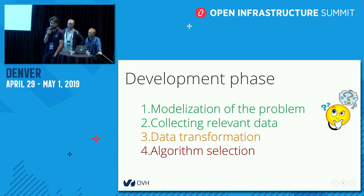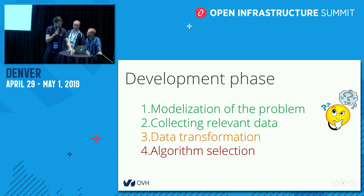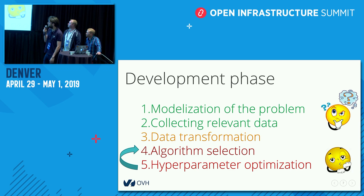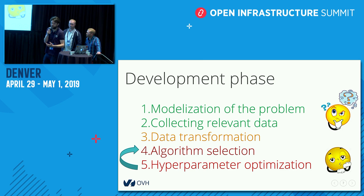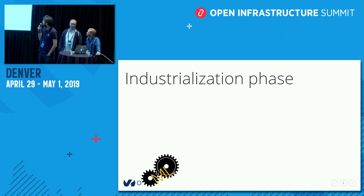Then we need to select an algorithm — and let's face it, even if sometimes we have an idea of what's going to be better, it's more or less luck. After that, algorithms have a lot of hyperparameters that we need to optimize. This is a very tedious process — it's very long, boring — and we end up going back, selecting another algorithm and trying a bunch of things. Once we have a trained model, we need to industrialize: typically we build an API that's going to be used by other applications.